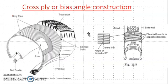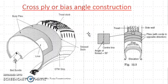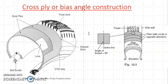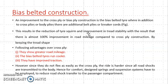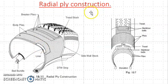To summarize what we have learned in this video: we covered cross ply or bias angle construction — you should be able to redraw this figure correctly — and bias belted construction, where only one belt ply is added over the cross ply arrangement. In the next video, we are going to learn the third type, which is radial ply construction.